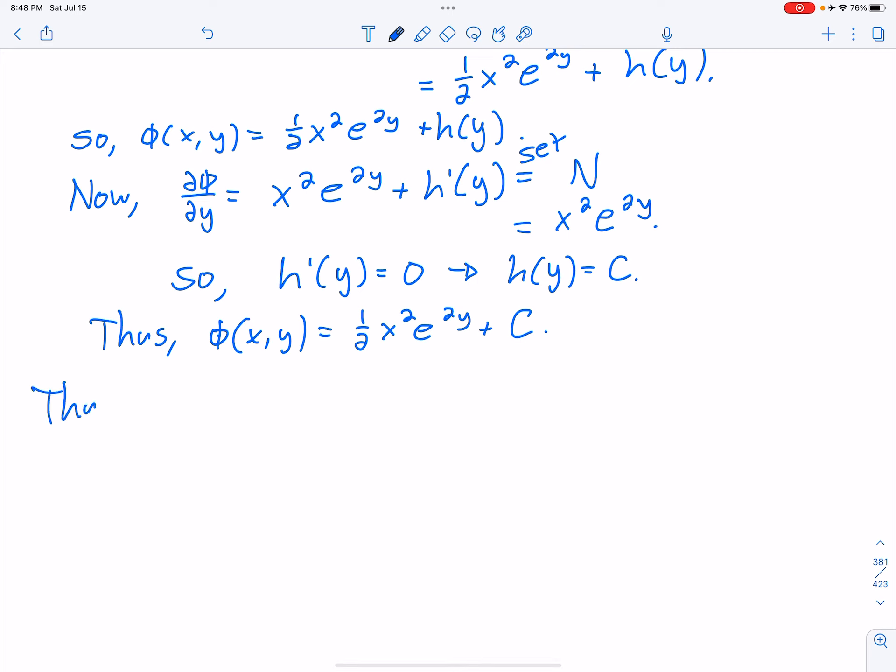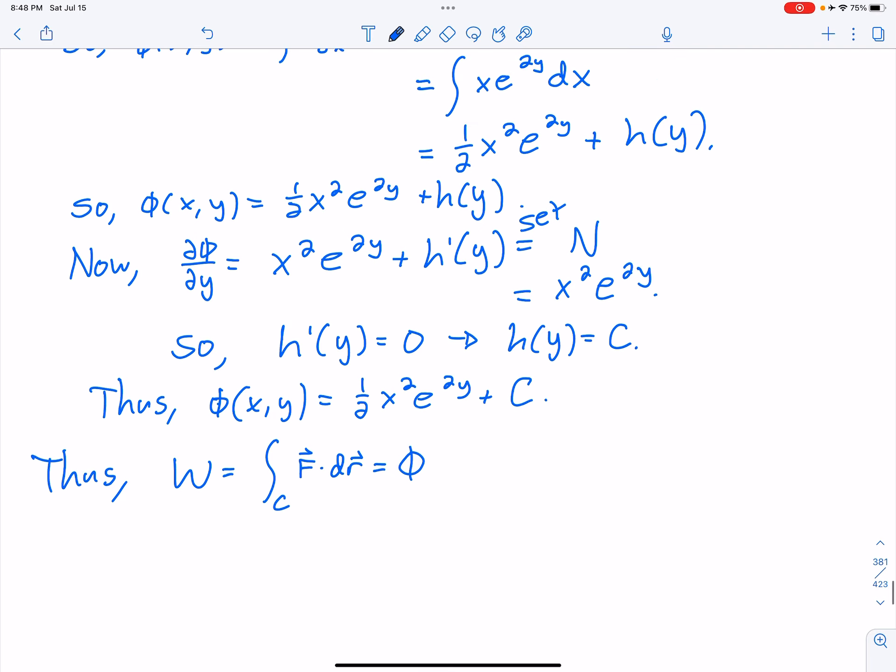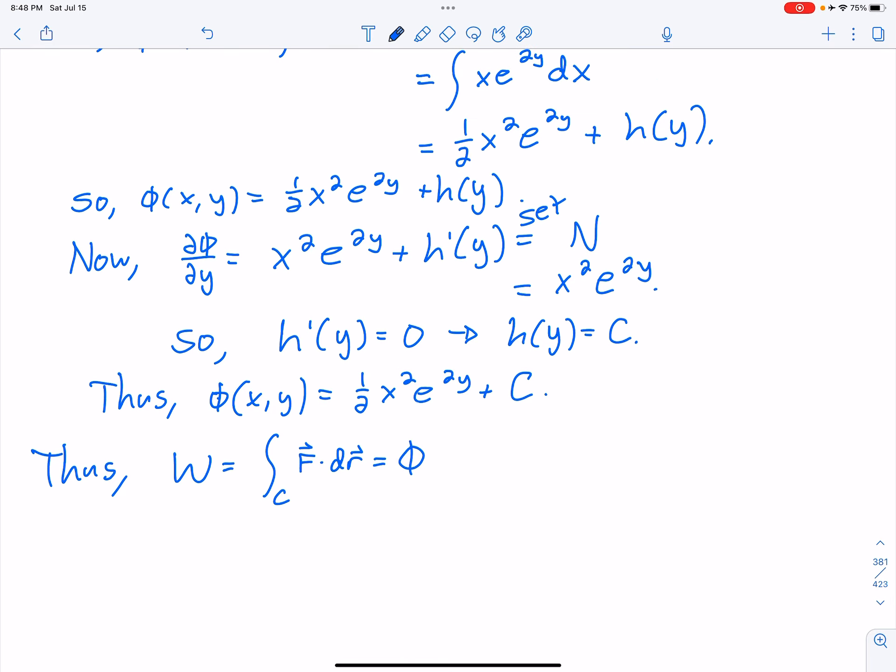So thus, or therefore, the line integral through the conservative vector field F dotted with dr, which will give us work, is equal to phi of, and I forgot the points, I can look at my notes. It was negative 1, 1, minus phi of 0, 0.